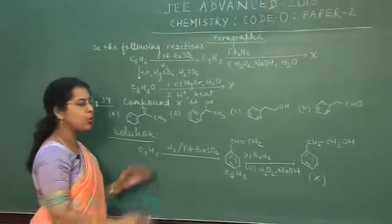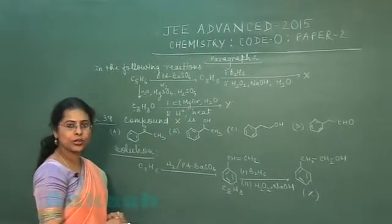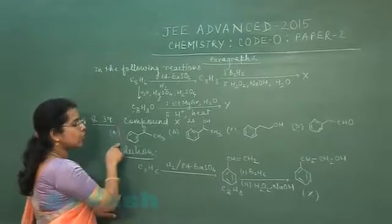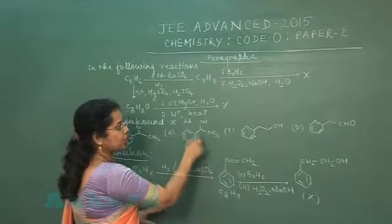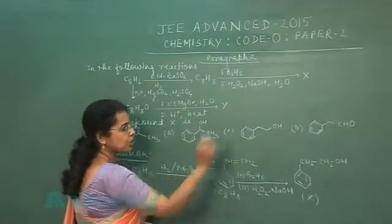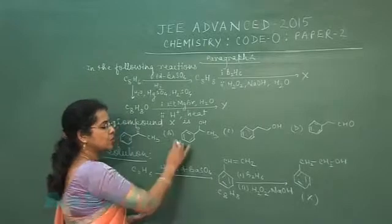Four options given हैं. उन option में हमें इस structure को identify करना है. First option is ketone. Second option is alcohol, that is secondary alcohol. जबकि reaction का product बन रहा है primary alcohol.